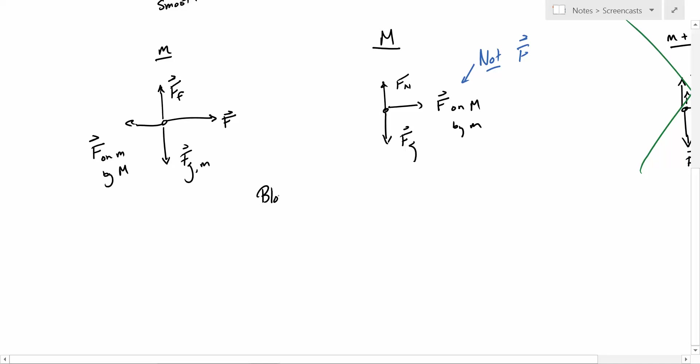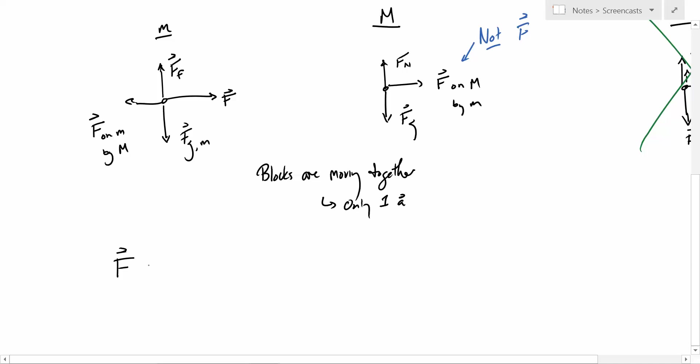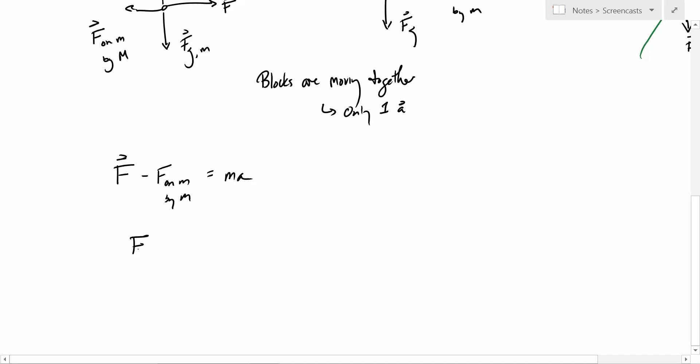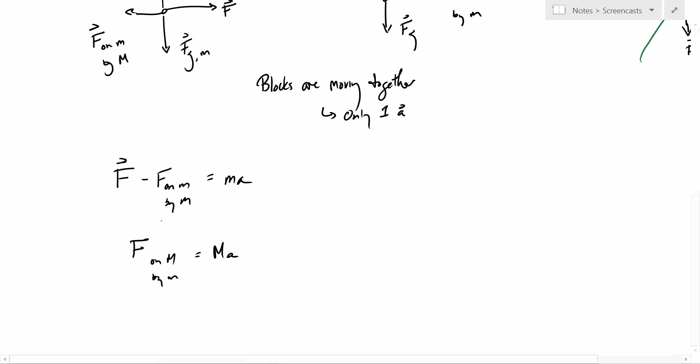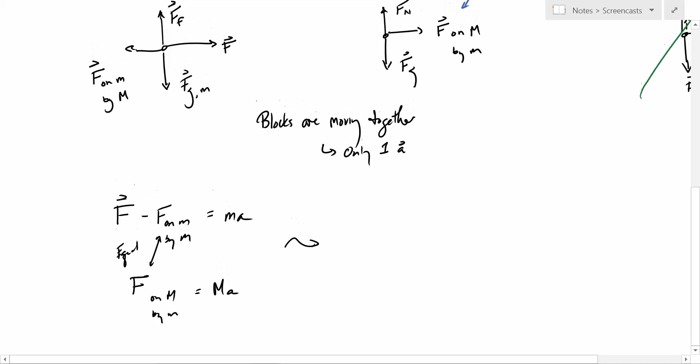So let's take a look here. One thing we know, the two blocks are moving together. So there is only one acceleration. Which means that we have this statement, that F minus F on m by M must equal little m a. And F on M by m must equal M a. So we know these two statements are true. Furthermore, we know that these two are equal in magnitude.